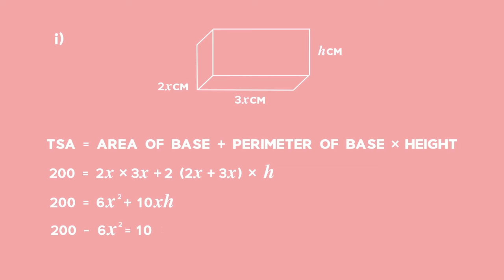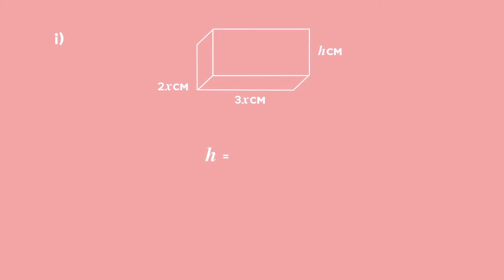Subtract 6x² from both sides to leave the term involving h on its own. To make h the subject of the formula, divide both sides of the equation by 10x. If we divide each term in the numerator by 10x, we arrive at the required formula.